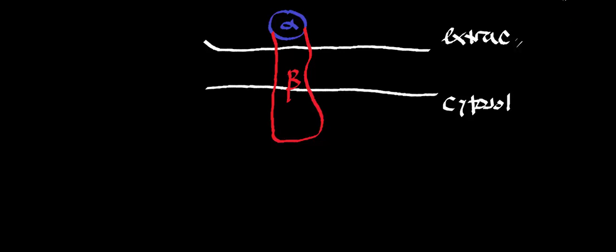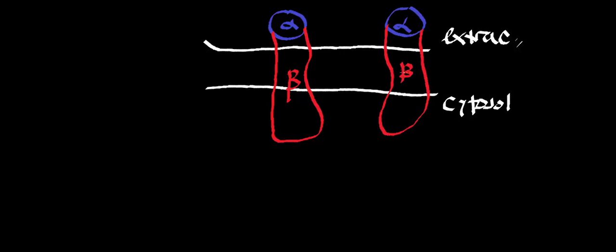Ordinarily, there's an array of these proteins that exist in the membrane at various locations — each with alpha subunits and beta subunits. What's really critical to understand is that these proteins exist as monomers.